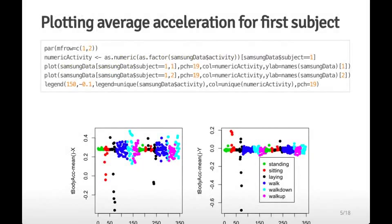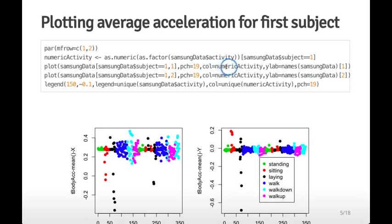We start by looking at some variables. A numeric vector is created for the activities: one for standing, two for sitting, three for laying, four for walking, five for walking down, and six for walking up. Taking the data for just the first subject, we plot the first variable — mean acceleration on the x-axis — colored by activity. You can see that laying or standing still showed little activity, while walking down or up varied much more. We can also plot the y-axis variable.